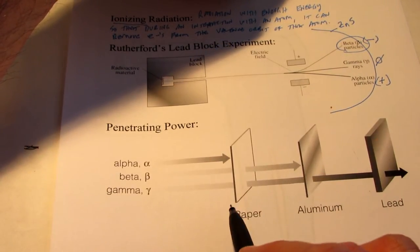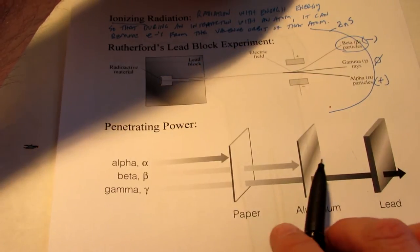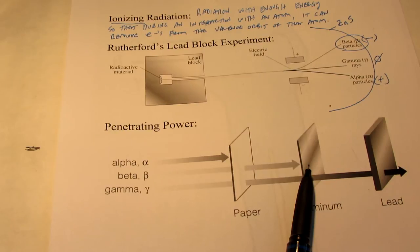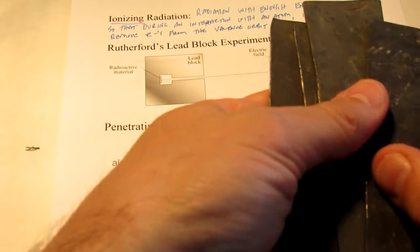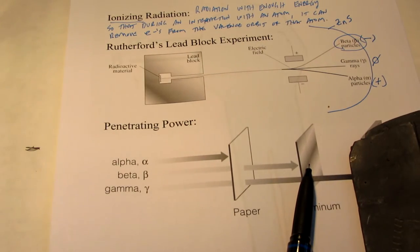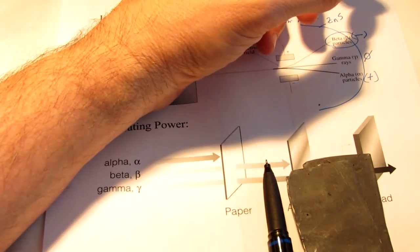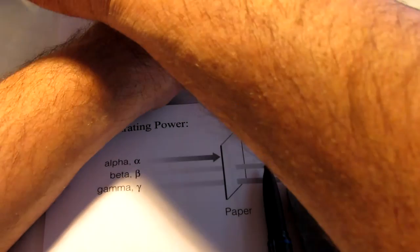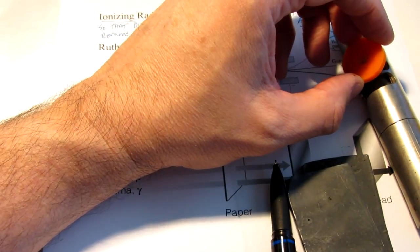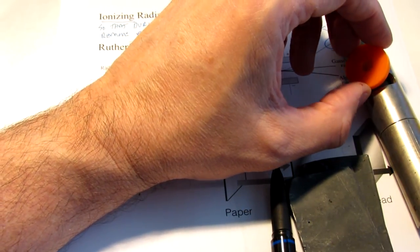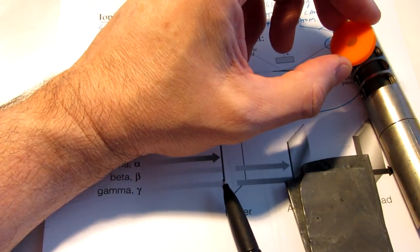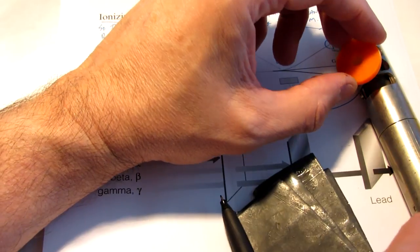Gamma radiation can penetrate paper, aluminum, and several sheets of lead. In fact, let's take a look here. I have a total of four sheets of lead, and let's see what happens here with the gamma radiation. So we'll turn our volume back up, and let's see. There's our gamma, and one piece of lead doesn't do anything. Let's put all four pieces there and see what happens.